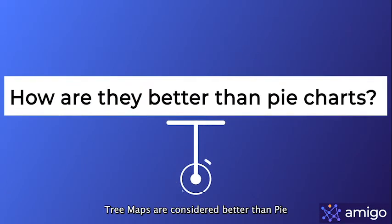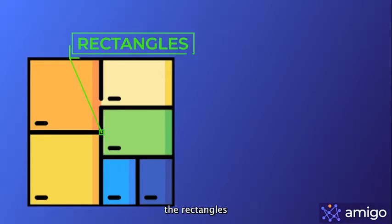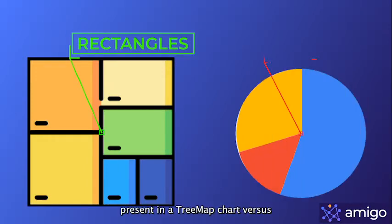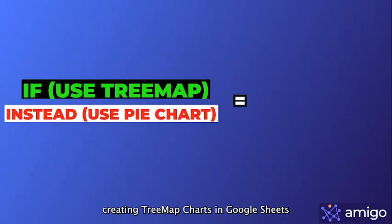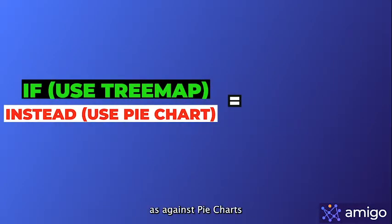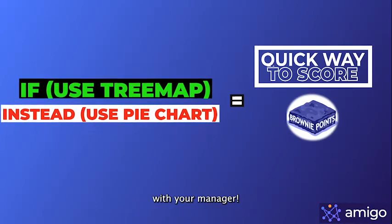Tree maps are considered better than pie charts primarily because the human mind finds it easier to perceive the rectangles present in a tree map chart versus the wedges in a pie chart. Since most reports involve a breakdown view of data, creating tree map charts in Google Sheets might just be the quick way to score some extra brownie points with your manager.